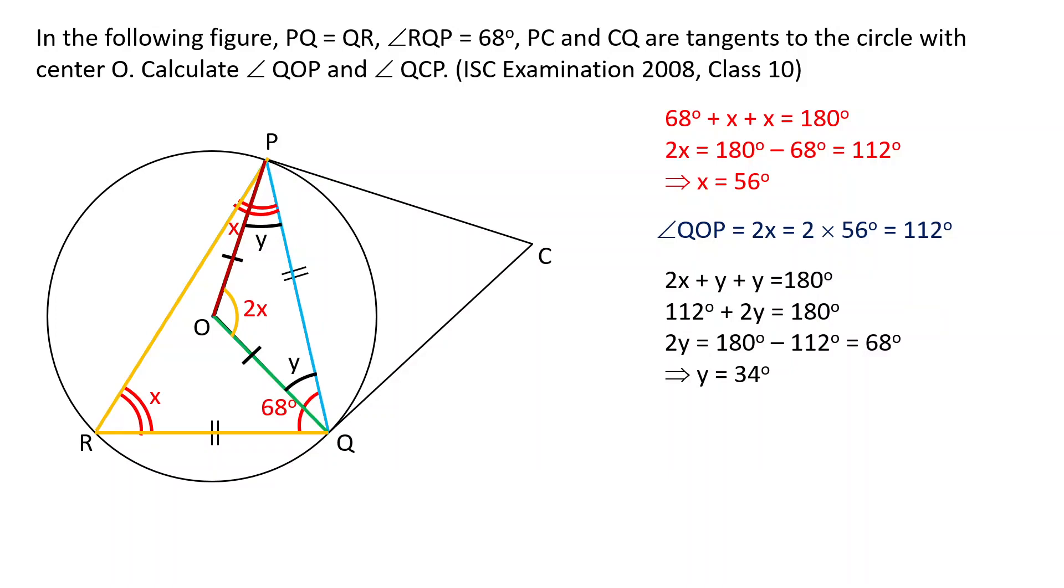Now OP is the radius and PC is the tangent, and we know that the angle between tangent and radius at the point of contact is 90 degrees. So we can find out this unknown angle z, because the unknown angle z is 90 minus y, and that angle is 56 degrees.